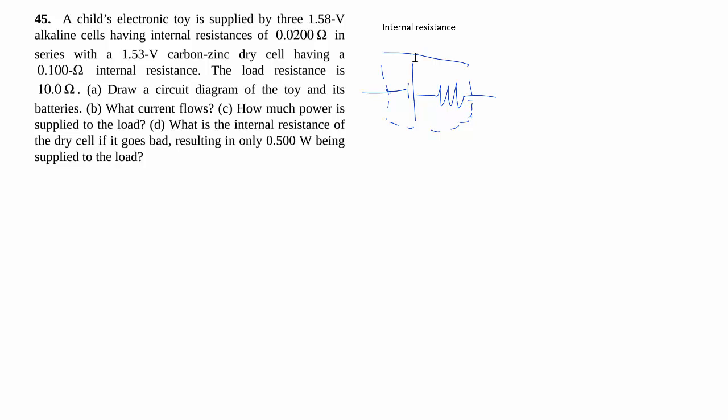And so the actual analysis is quite simple, once we've made the change of the model. Let's see how that works in the question. In this case, we have a toy that's supplied by three batteries with some resistance, as well as another battery having some other internal resistance.